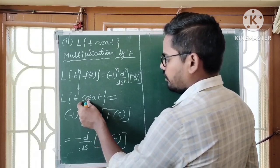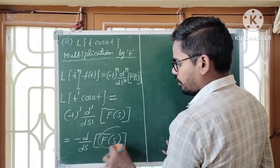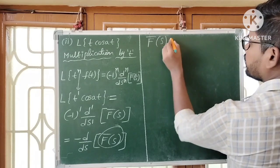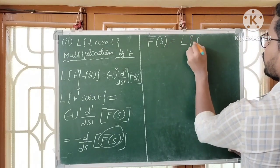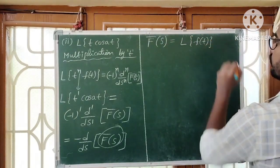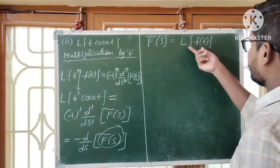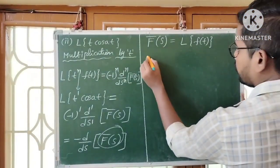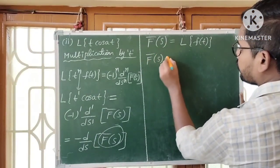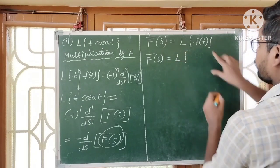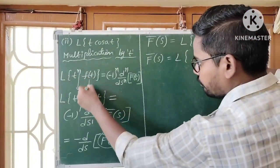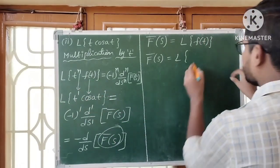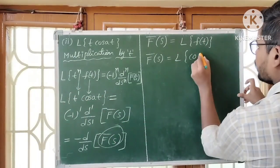To find this value, we first need F̄(S). In Laplace transforms, F̄(S) equals L{F(T)}. In this question, F(T) is cos(AT). So we need the Laplace transform of cos(AT).